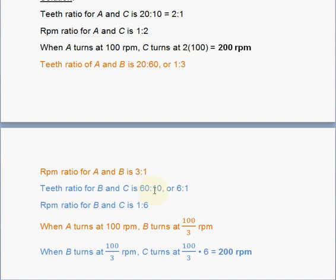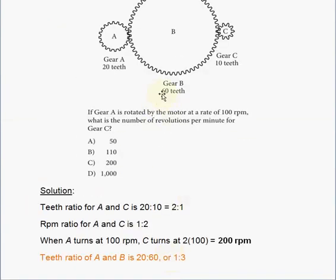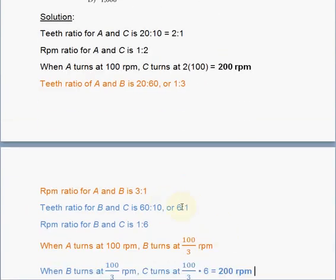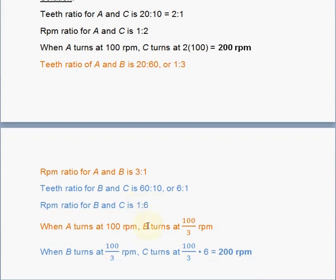Teeth ratio for B and C is 60 to 10, or 6 to 1. Because if we divide both sides by the greatest common factor, 10, we get 6 to 1. RPM ratio for B and C is the other way around. 1 to 6. So when B turns at 100 over 3 RPM, we found this result previously, 100 over 3. Then C will turn at 100 over 3 multiplied by 6. And that gives you 200 RPM because 6 over 3 here. You notice that you can divide 6 by 3 to get 2. So 2 will multiply 100 to get 200.